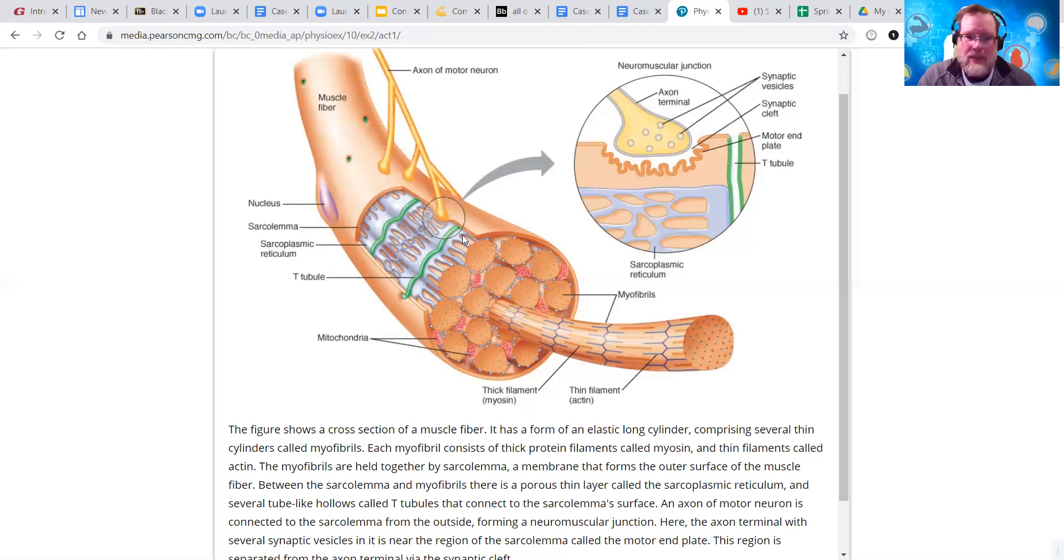We can see the sarcoplasmic reticulum, which is where the calcium is stored. And then these T-tubules, where we're going to see some of the excitation, some of the sodium rushing in, altering the charge of this area, and in essence, kicking calcium out of where it's normally stored. So, calcium will get released.